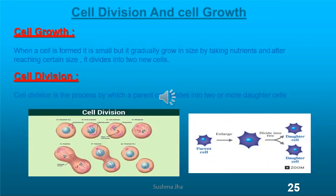Cell division and cell growth: when a cell is formed it is of very small size, and gradually it grows by taking nutrients. After reaching a particular size it starts dividing into new cells — that is reproduction or cell division. Cell division is the process by which a parent cell divides into two or more daughter cells. Different processes include binary fission, mitosis, meiosis, budding, etc.